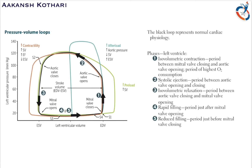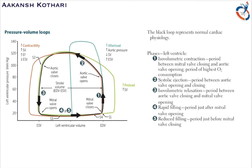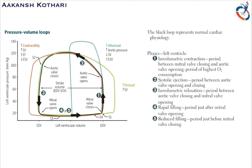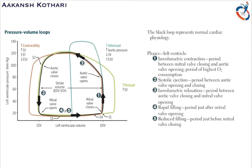With an increase in afterload, the pressure in the aorta increases, which resists blood flow and hence decreases stroke volume. The end systolic volume increases tremendously, decreasing the stroke volume. Since a lot of blood remains in the ventricle at end systole, the left ventricular pressure is also elevated. There is an increase in aortic pressure, decrease in stroke volume, and increase in end systolic volume.